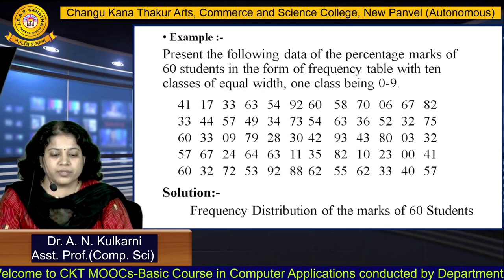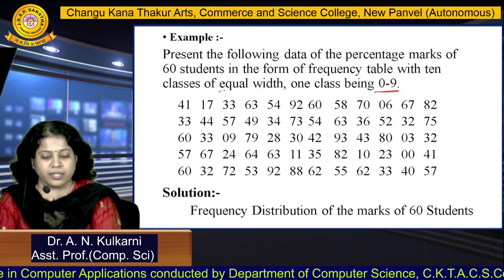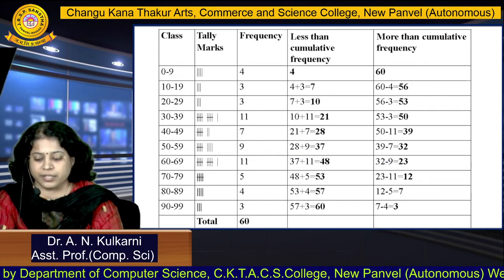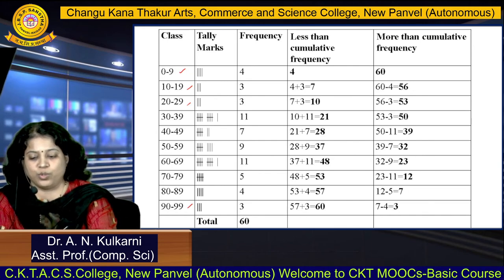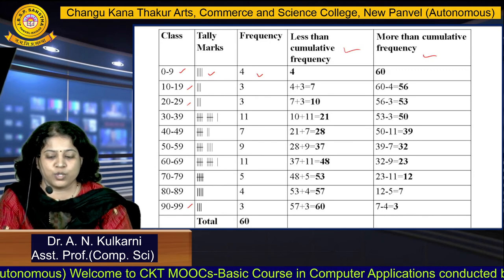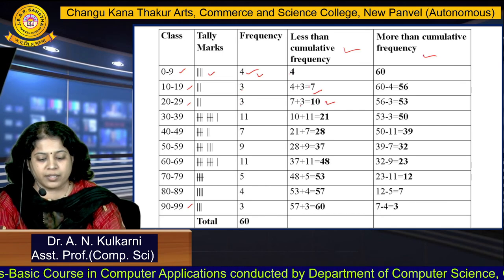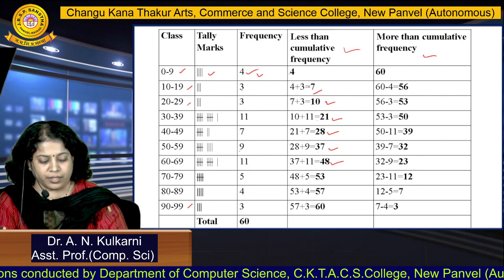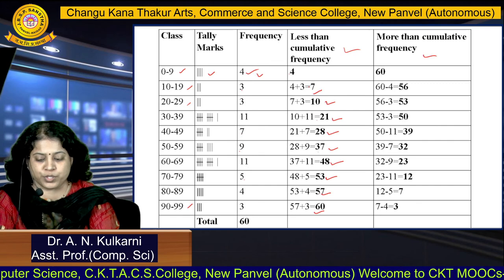Another example: marks of 6200 students are given with 10 equal-width classes starting from 0 to 9. For less than cumulative frequency, start from the first frequency of 4 and add successively: 4 + 3 = 7; 7 + 3 = 10; 10 + 11 = 21; 21 + 7 = 28; 28 + 9 = 37; 37 + 11 = 48; 48 + 5 = 53; 53 + 4 = 57; and 57 + 3 = 60. This gives the less than cumulative frequency for all 10 classes.